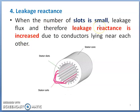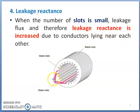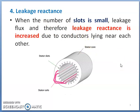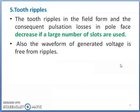Regarding leakage reactance, when the number of slots is small, there will be an increase in leakage flux and consequently leakage reactance increases. This is because conductors come very close to each other. The image shows stator coils placed in the slot, and with a smaller number of slots, two conductors come close, increasing leakage reactance and affecting some performance parameters of the machine.